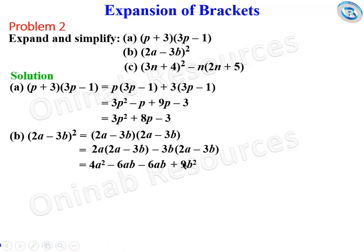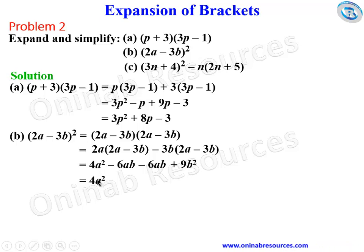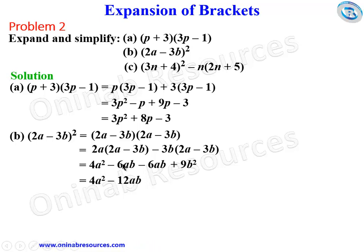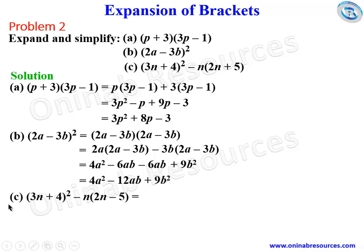Remember, minus 3b times minus 3b gives 9b squared. Simplifying the middle terms: minus 6ab minus 6ab gives minus 12ab. So the final answer for part b is 4a squared minus 12ab plus 9b squared.